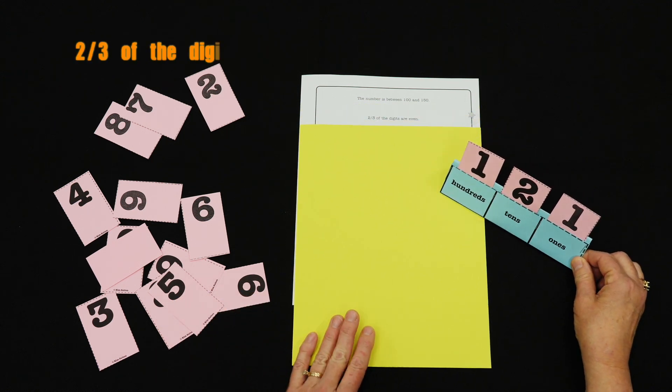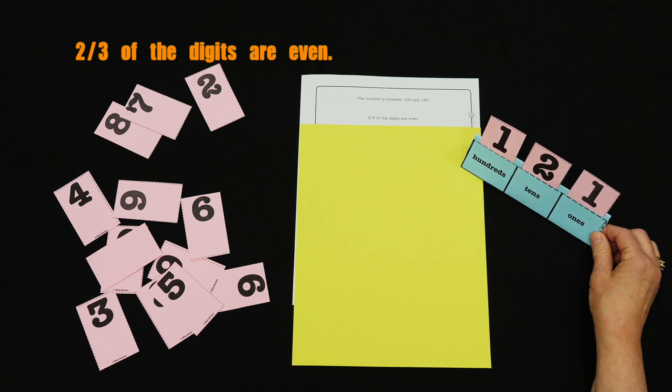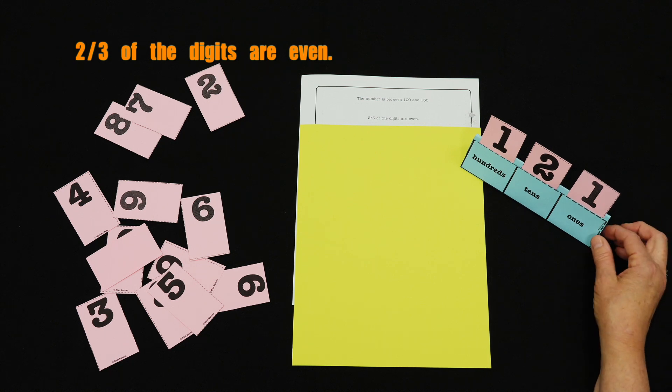You can even put these place value pockets in order from least to greatest to give them practice sequencing numbers. The second clue is revealed: two-thirds of the digits are even. The child looks at their place value pocket. Wow, I only have one of the three digits even. I've got to make a change.